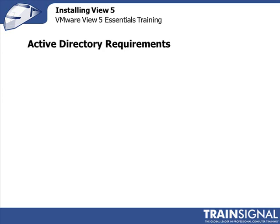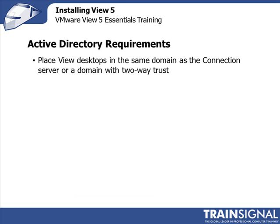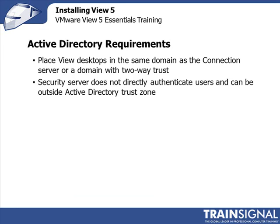For Active Directory integration requirements, you'll want to place your View desktops in the same domain as the connection server, or at least a domain with a two-way trust relationship. The security server doesn't have to directly authenticate users — it passes that through to the View connection servers on the internal LAN. So security servers in the DMZ, as best practices recommend, don't have to be joined to a domain.